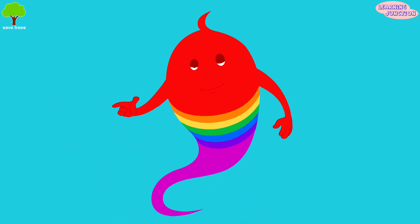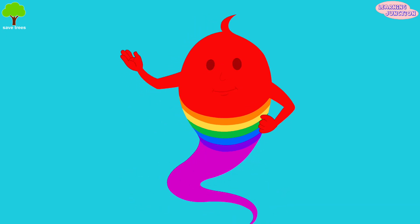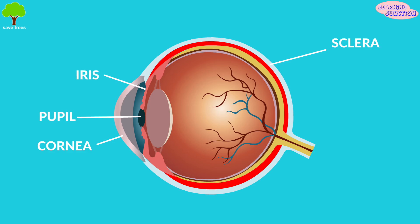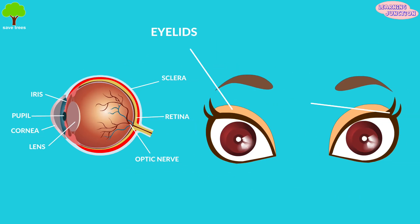Now, let's review the parts of the eye once again. This is the cornea, sclera, iris, pupil, lens, retina, optic nerve, eyelids, eyelashes, and these are the eyebrows.